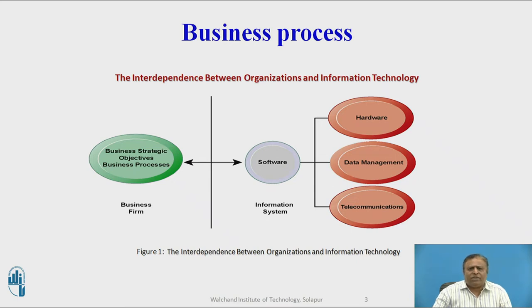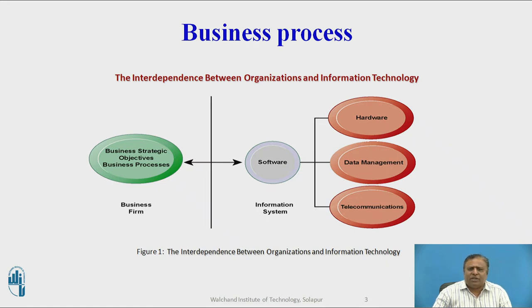There is a growing interdependence between a firm's ability to use information technology and its ability to implement corporate strategies and achieve corporate goals. What a business would like to do in five years often depends on what its systems will be able to do. Increasing market share, becoming a high-quality or low-cost producer, developing new products, and increasing employee productivity depend more on the kinds and quality of information systems in the organization.